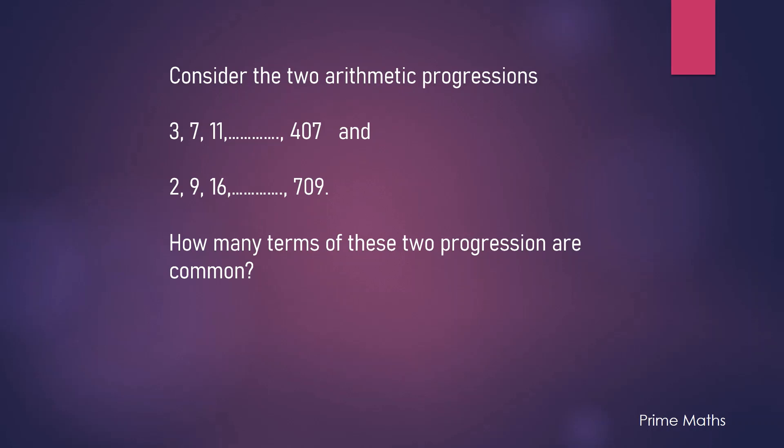One is to find the number of common terms in these two progressions. If you want to give it a try, pause the video and give it a shot. The first brute force method is to write down the whole progression and see how many terms are common. But this is too cumbersome as the progression has 102 terms.